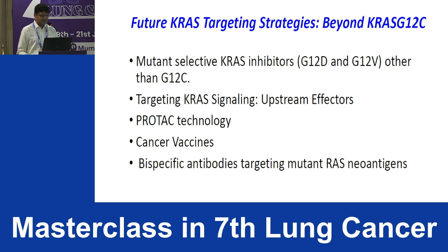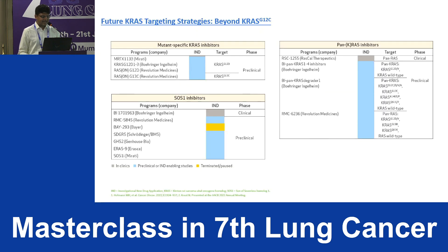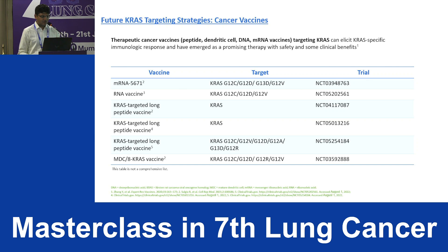Despite that, we are not stopping at G12C inhibitors. More KRAS inhibitors are in development — G12D, G12V, pan-KRAS inhibitors, upstream effectors, PROTAC technology, cancer vaccines, bispecific antibodies, and CAR T cells. There are pros and cons to allele-specific versus pan-KRAS inhibitors, especially regarding toxicity with pan-KRAS inhibitors. Many things are ongoing in the KRAS space.